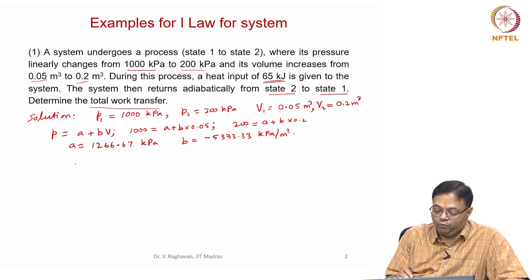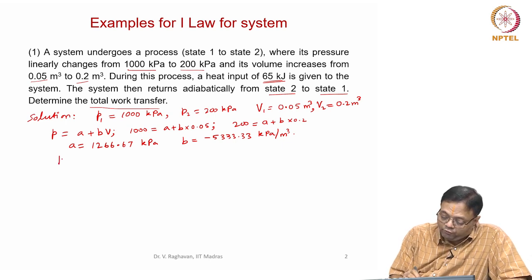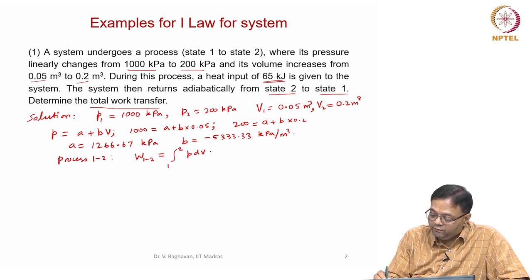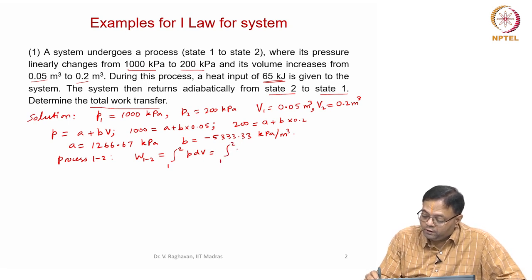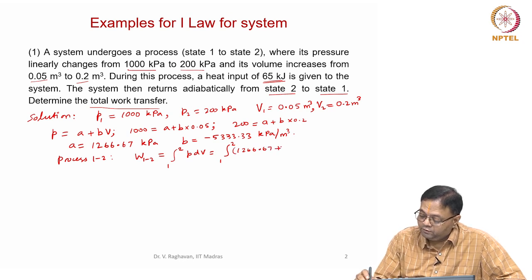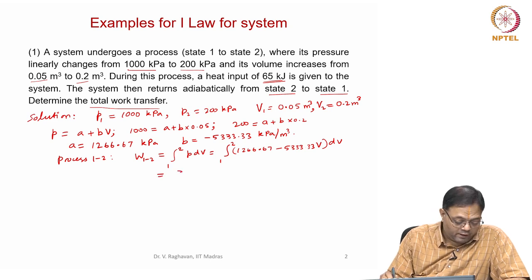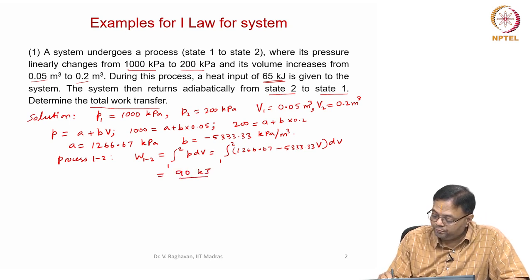From these two equations we get a = 1266.67 kilopascals and b = −533.33 kilopascals per meter cube. Now we can integrate for process 1 to 2 where the pressure increases linearly. The work output is W = ∫PdV = ∫(1266.67 − 533.33·V) dV, which gives work = 90 kilojoules for process 1 to 2.